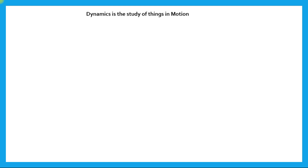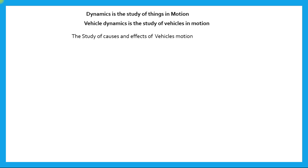Let's dive into the introduction of vehicle dynamics. The term dynamics refers to the study of things in motion — that's the basic definition from physics. Naturally, vehicle dynamics is the study of vehicles in motion. To give a more insightful definition, we can state it as the study of the causes and effects of a vehicle's motion. The cause will be the input and the effect will be the output.